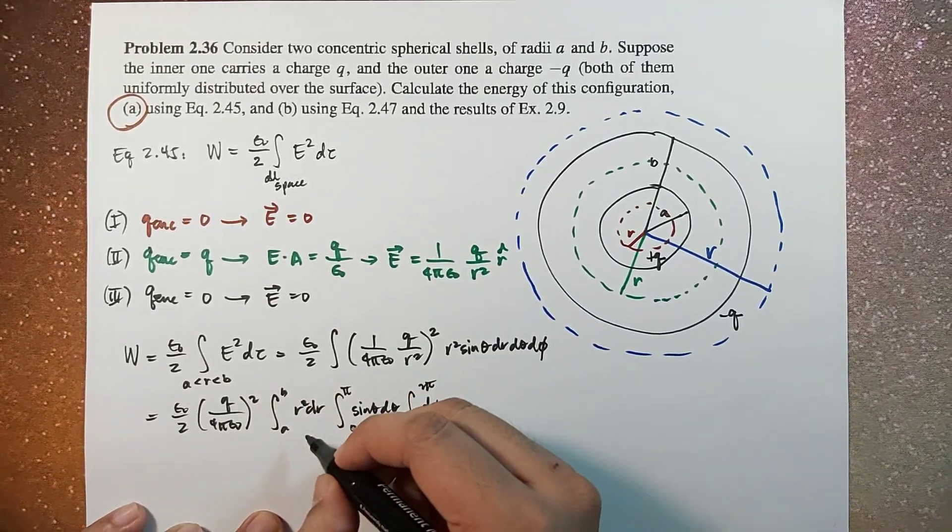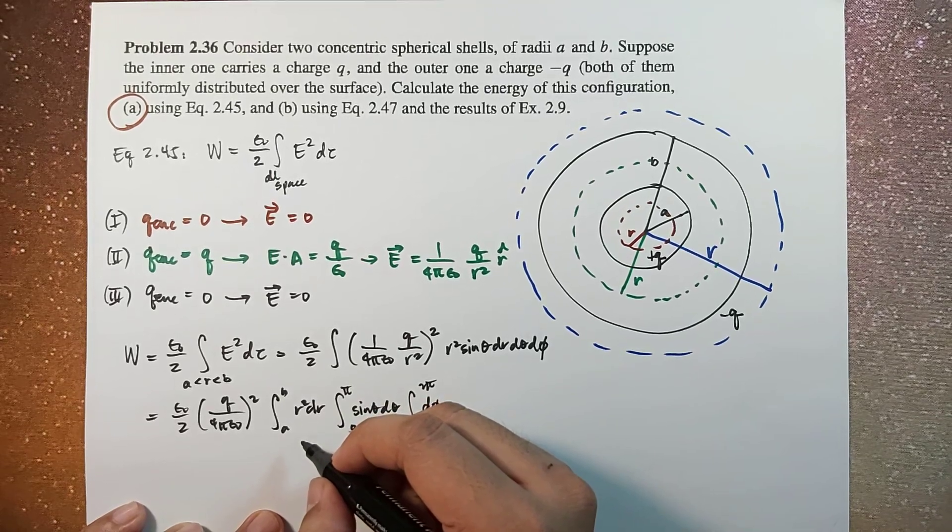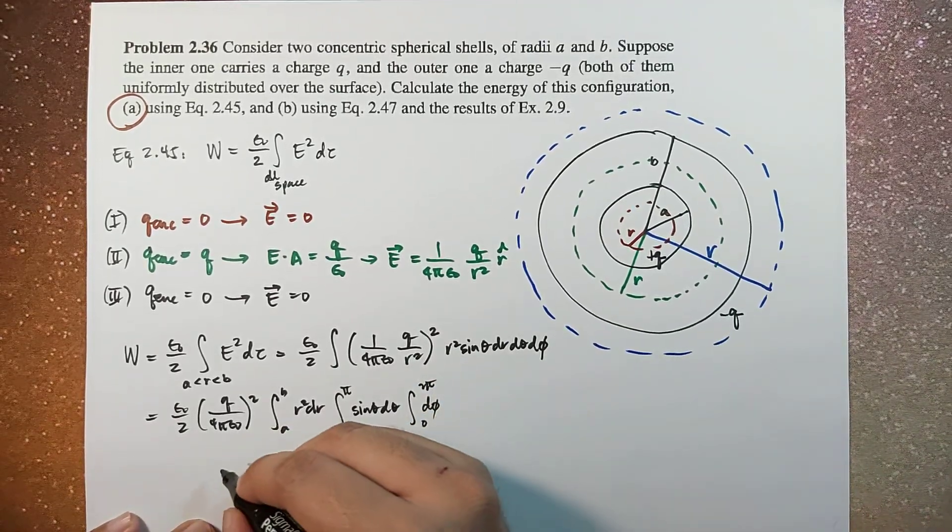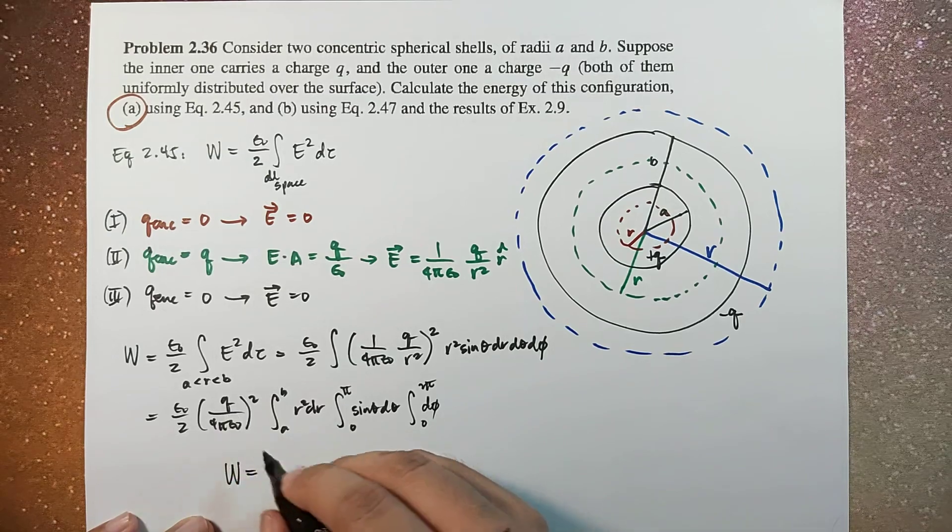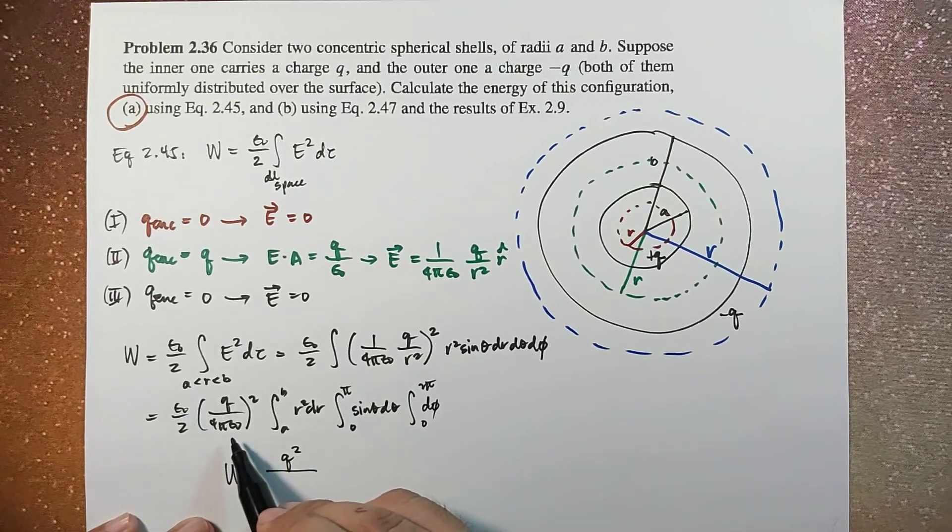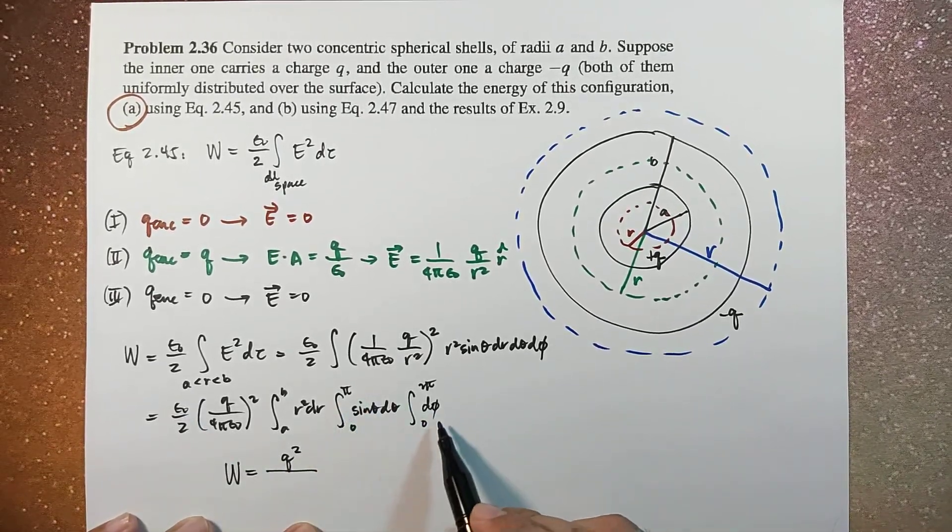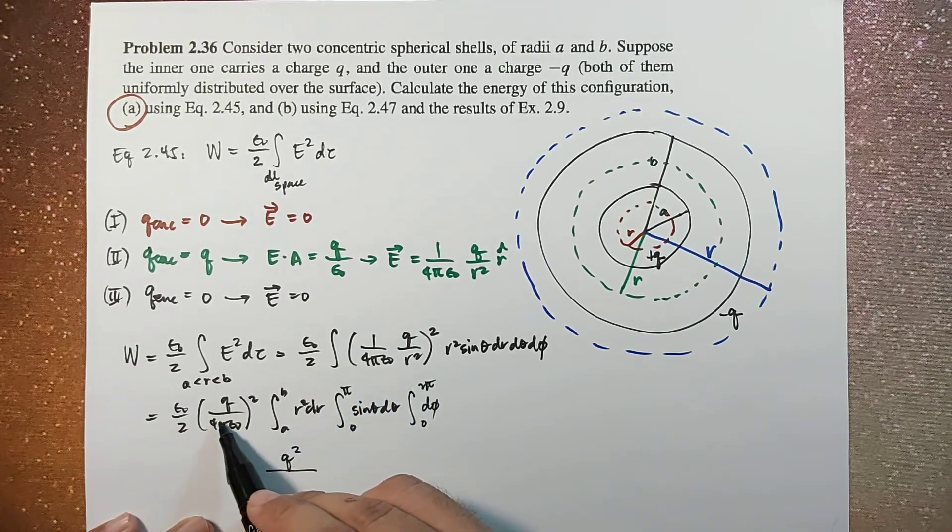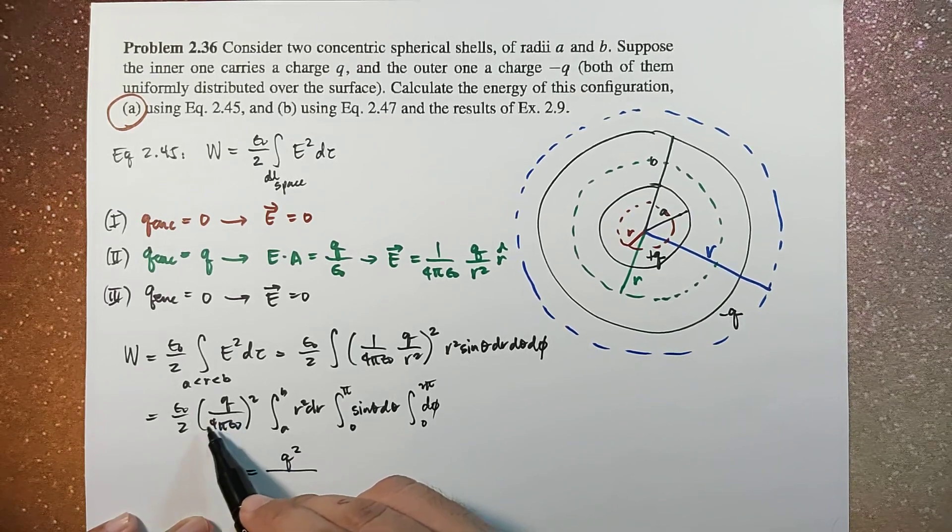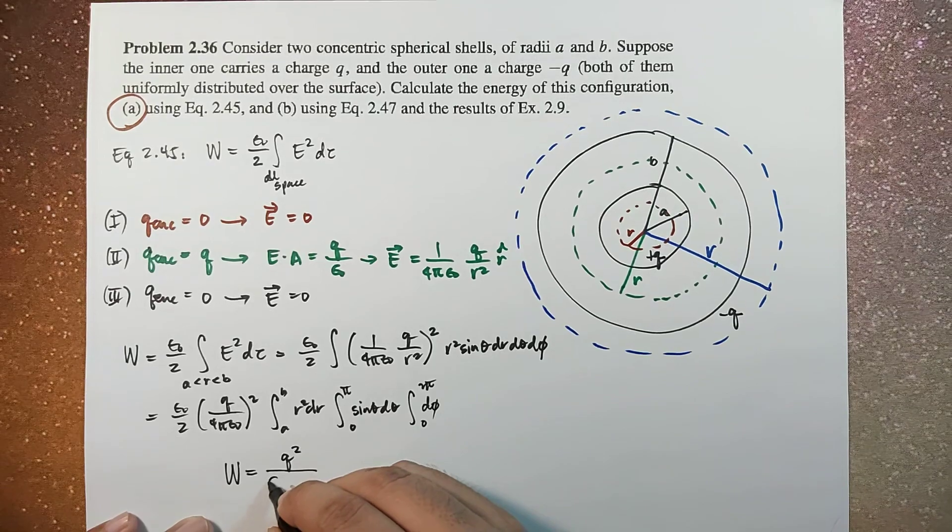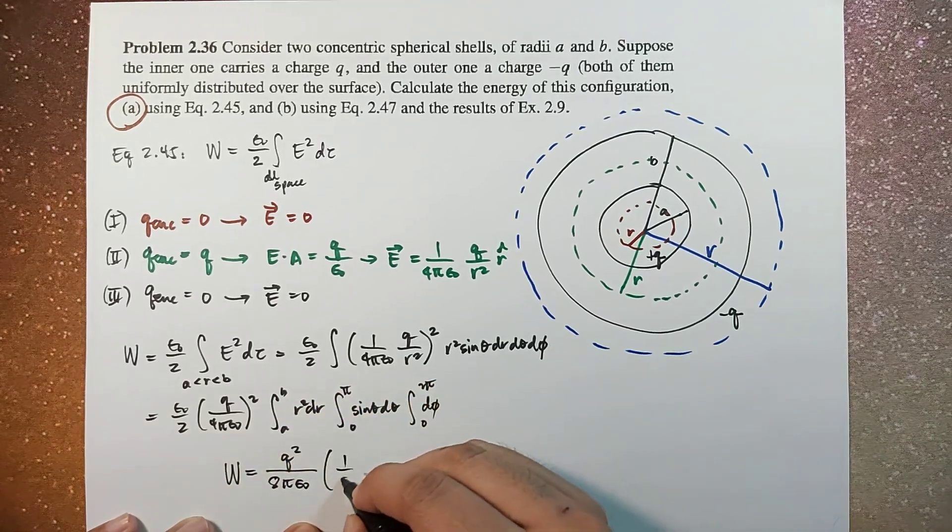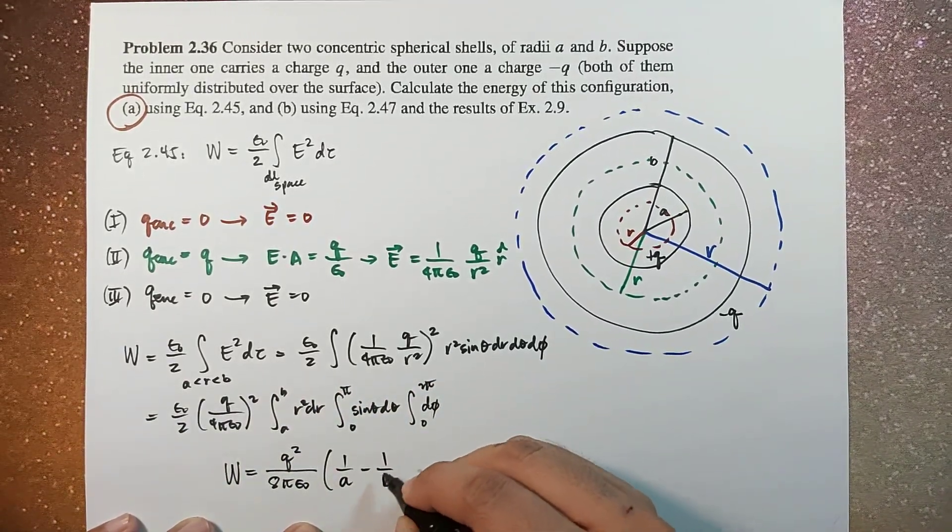So this is 4 pi, and this is 1 over A minus 1 over B. So the total work done will now be equal to Q squared over, one of the epsilon here will cancel, and then there is 4 pi here which will cancel with one of the 4 pi here. So this becomes 4 pi times 2, so that becomes 8 pi epsilon naught times 1 over A minus 1 over B.